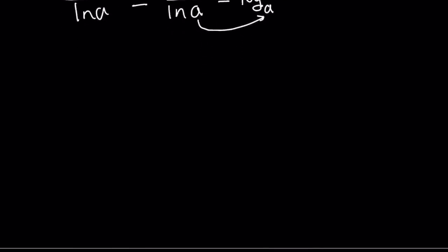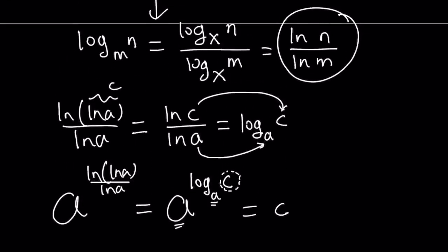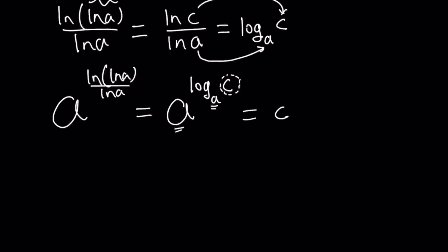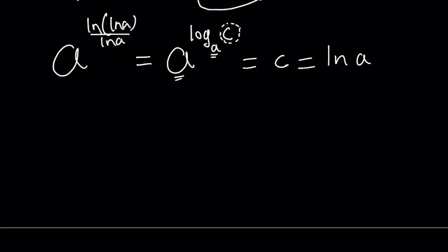So let's go ahead and substitute that. We have a to the power ln ln a over ln a. I'm going to replace ln ln a over ln a with log c with base a, giving us a to the power log c with base a. From properties of logarithms — which we can prove by setting this equal to something and logging both sides — when the bases are the same they cancel out, so this equals c. Going back, c is equal to ln a, so our expression is equal to ln a as before.